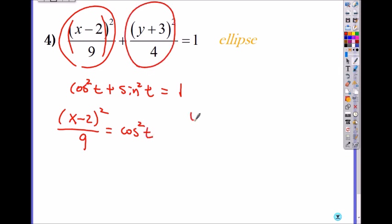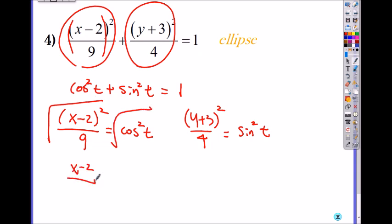And this, I can set that equal to y plus 3 over 4, squared, equals sine squared of t, because cosine squared of t plus sine squared of t adds to 1. Then we can square root both sides to simplify. So I get x minus 2 over square root of 9 is 3, equals cosine of t. And here, when you square root both sides, you get y plus 3 over 2 equals sine of t.